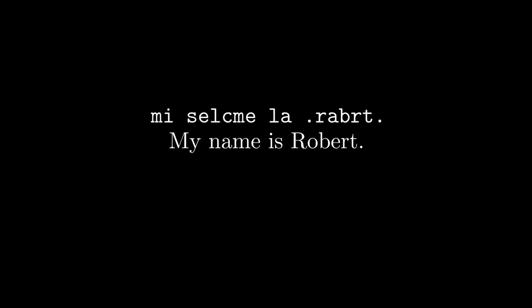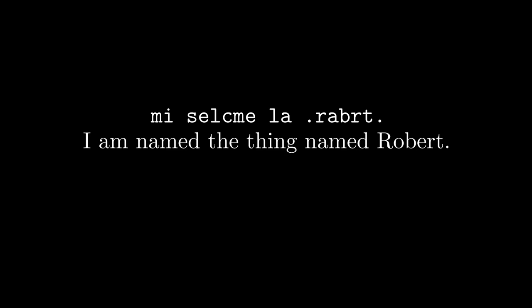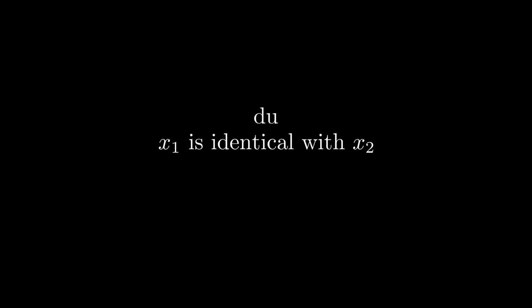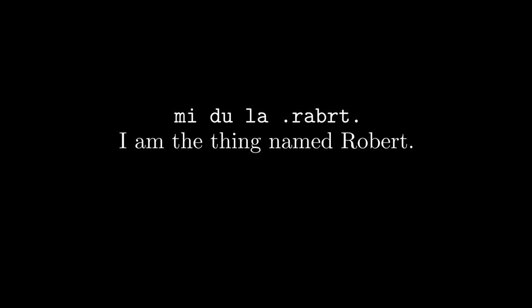Thanks to Keldwick Chaldain for pointing out an error from the last video. When saying 'my name is Robert', using 'mi selcme la Robert' actually means 'I am named the thing named Robert'. Instead, use a Lojban quote: 'mi selcme zo Robert', where 'zo' is a cmavo that quotes the next word, so you're saying 'I am named, quote, Robert'. Alternatively, you can use 'du' — a selbri meaning x1 is identical with x2 — as in 'mi du la Robert', meaning I am identical with the thing named Robert.